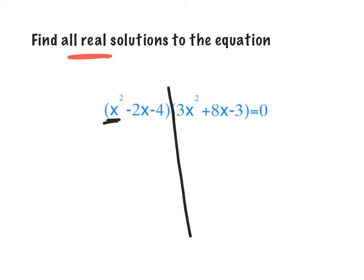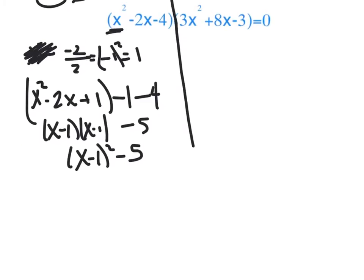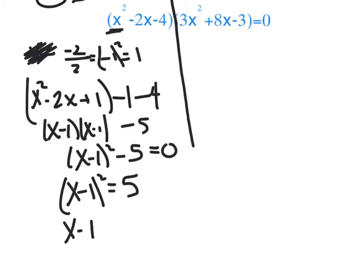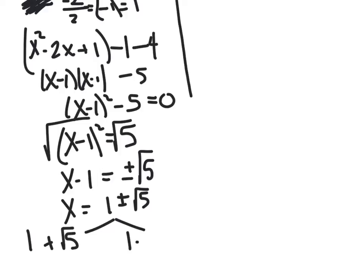Pause it and try completing the square yourself. Taking the b term, dividing by 2 gives negative 1, squaring gives 1. Adding and subtracting 1, I rewrite as (x - 1)² - 4 = 0, and setting that equal to zero: (x - 1)² = 5. Taking the square root: x - 1 = ±√5. I can't simplify √5, so bringing the 1 over: x = 1 ± √5, giving solutions x = 1 + √5 and x = 1 - √5.